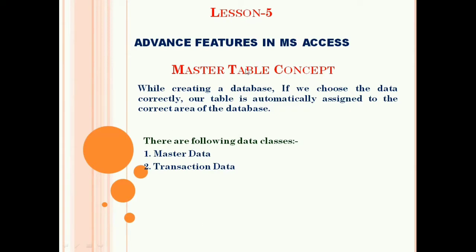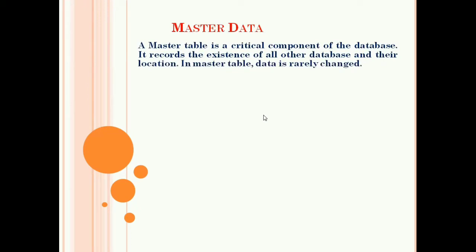The master data concept means that when creating a database, if we choose any type of data correctly, our table is automatically assigned to the correct area of the database. The master table is a critical component of a database. In that table, we store all types of records. It records the existence of all other database objects and their location. In the master table, data is rarely changed.